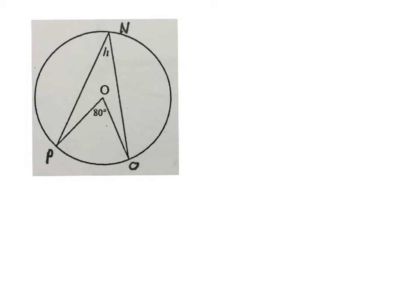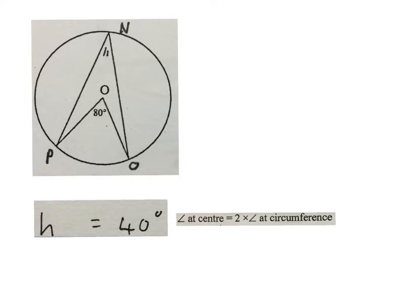In this question, they are telling me that O is the center of the circle. N, P and O are on the circumference of the circle. And they tell me the angle over there is 80 degrees. You have to work out H. And you write H equals to 40 degrees. Angle at center is 2 times angle at circumference.